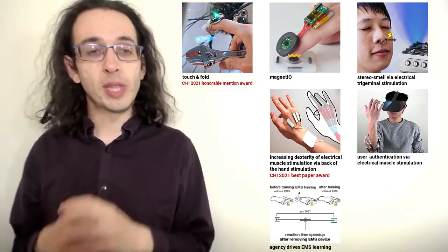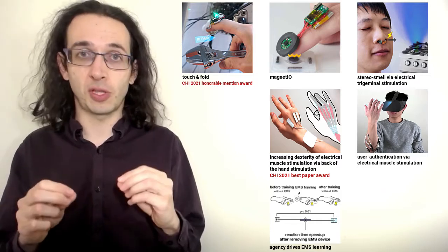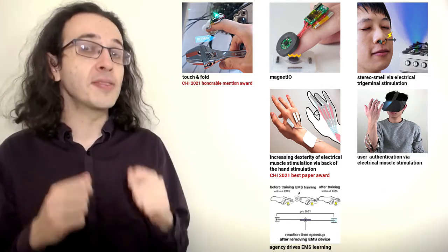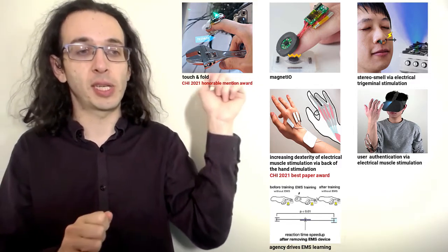In this paper, we demonstrate that using a muscle stimulation strategy that preserves the user's sense of agency during electrical muscle stimulation training actually ends up speeding up the user's reaction time even after they remove the electrodes.